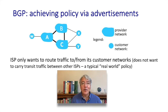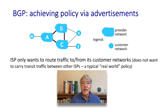Let's take a look at how path advertisements can be used to implement routing policy. The policy is: an ISP only wants to forward datagrams that have either a source or a destination in one of its customer ISPs. This is actually a real-world policy. Why would an ISP want to forward traffic that's just passing through? That's called transit traffic. Transit traffic generates no income. It's only the ISP's customer networks that are actually paying for service, so the ISP's policy is to only route traffic that has either a source or a destination in one of its customer networks.